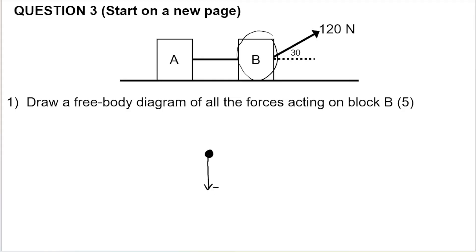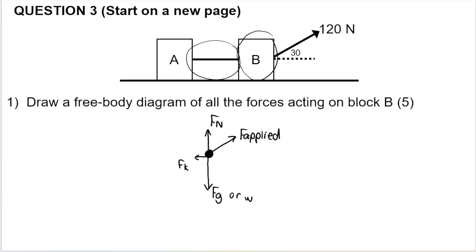We've got the force of gravity or weight acting straight downwards — FG or W. Because B is on a surface, it has a normal force FN acting straight up. Then we have the applied force acting up and to the right at an angle — F applied. It's very important to draw it at an angle. The block is moving to the right, so friction acts to the left — friction is always opposite to the direction of motion. The rope connects the two blocks, and tension for B is pulling it to the left, because B is dragging A along.